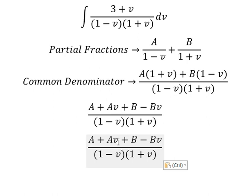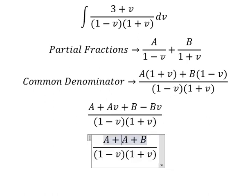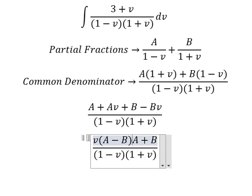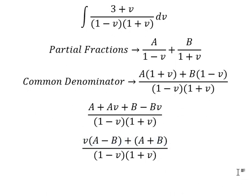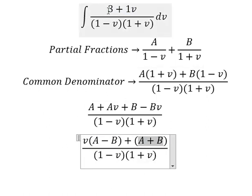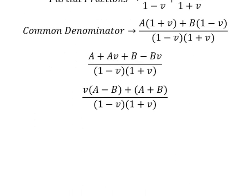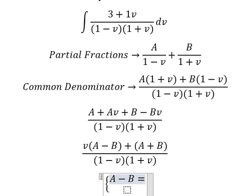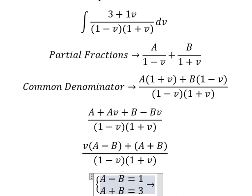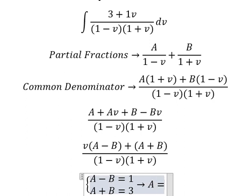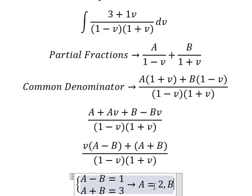We group the v terms and constant terms by factorization. This gives us the system of equations: A minus B equals 1, and A plus B equals 3. Solving the system: adding both equations gives 2A equals 4, so A equals 2, and substituting back gives B equals 1.